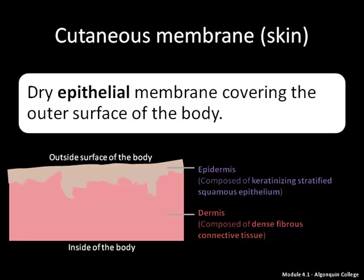The cutaneous membrane, or skin, is a dry epithelial membrane covering the outer surface of the body. The uppermost layer, which comes into contact with the outside surface of the body, is the epidermis. The epidermis is composed of keratinizing stratified squamous epithelium.